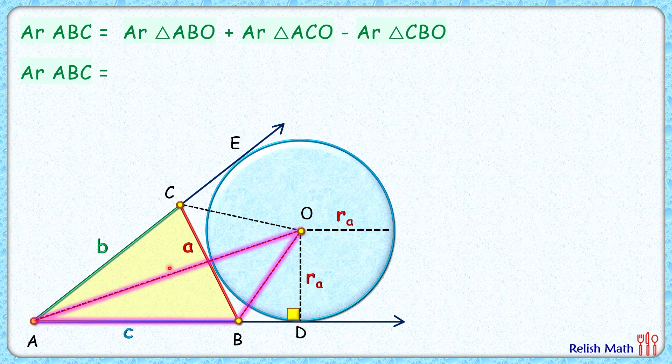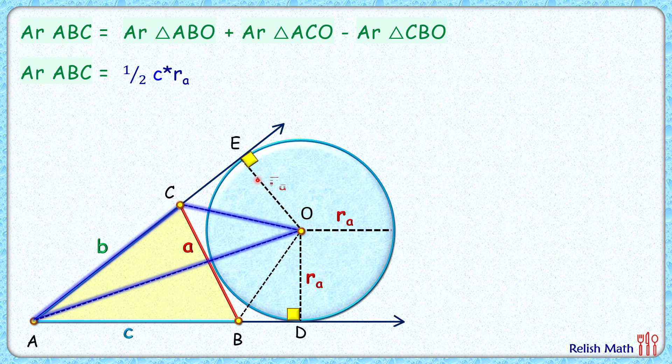So the area of this pink triangle is half of c times ra. Same way, for the area of this blue triangle, if we join OE, OE is the radius and is perpendicular to the tangent. If we consider b as the base, then ra is the height, so area is half of b times ra. For the green triangle, if we consider a as the base,